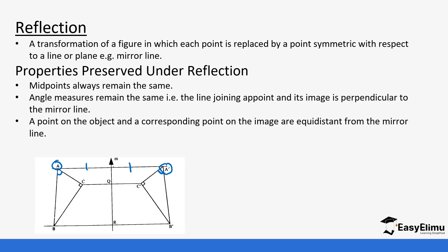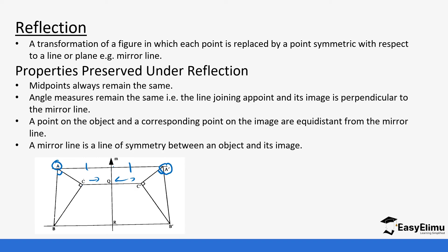A point on the object and a corresponding point on the image are equidistant from the mirror line — for example, point C and C prime are always equal distance from the mirror line. A mirror line is a line of symmetry, as we said in the previous lesson, because the line of symmetry gives us the same image on both sides at equal distances from the mirror line.